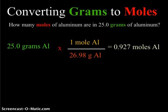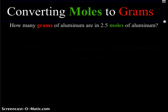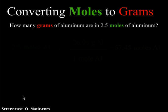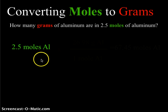Now let's look at the reverse of that process and convert moles to grams. The question is: how many grams of aluminum are in 2.5 moles of aluminum? Again, we're using green for moles as our start and red for grams as our end. We begin with that 2.5 mole sample of aluminum.